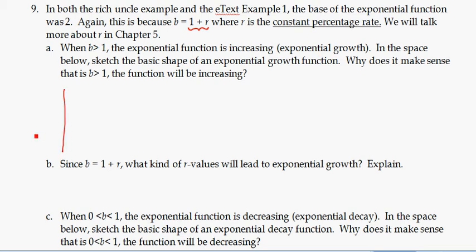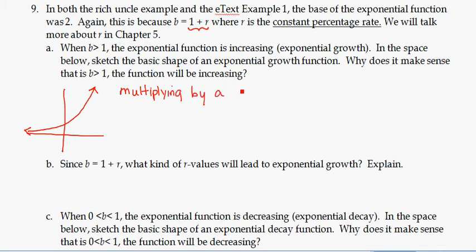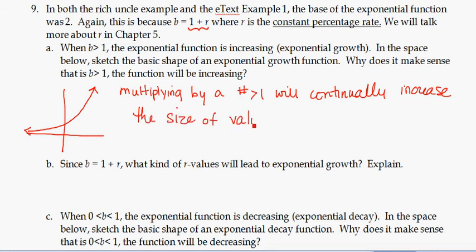The basic shape of exponential growth starts out very small and then very quickly increases, never actually reaching 0. This makes sense because if you continue multiplying by a number greater than 1 — like multiplying by 2 repeatedly — it will continually increase the value. So if your base is bigger than 1, you repeatedly multiply by something bigger than 1, and the size just goes up.